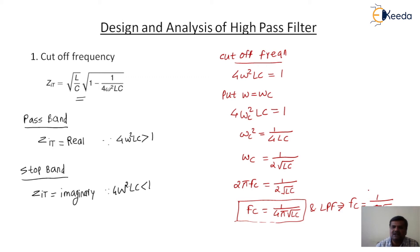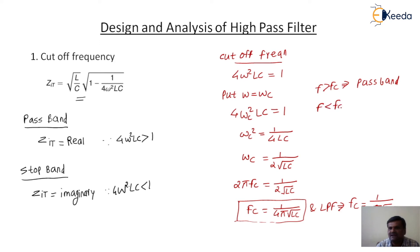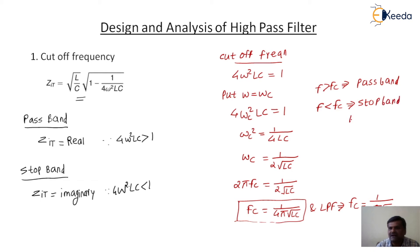We know that above fc (f greater than fc), the wave propagates and this region is called the passband. When f is less than fc, it represents the stopband. This is the characteristic of the high-pass filter.